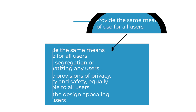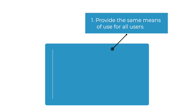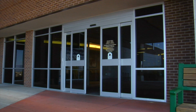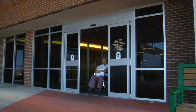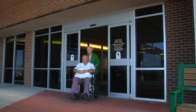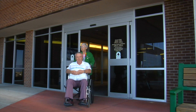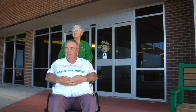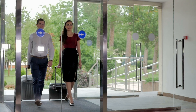First, provide the same means of use for all users – identical whenever possible, equivalent when not. This allows everyone to use the same features at the same time – for example, automatic doors that open for those who are walking, using a wheelchair, or rolling luggage.